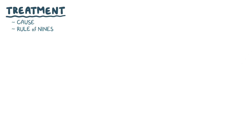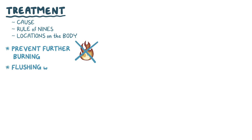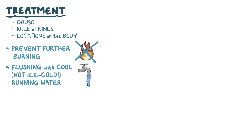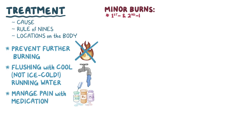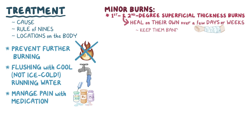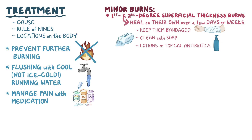The treatment for a burn is determined by what caused the burn, the rule of nines, and the location of the burns in the body. In general, immediate treatment typically includes preventing further burning, like flushing the burn with cool but not ice cold running water. After that, it's important to manage pain with medication. Minor burns, like first and second degree superficial thickness burns, can heal on their own over a few days or weeks by keeping them bandaged and clean with soap and water. Sometimes, lotions to prevent drying or topical antibiotics can be used. If blisters form, it's best to leave them alone, because the intact skin helps to prevent infections.